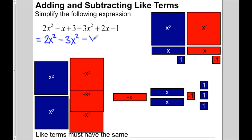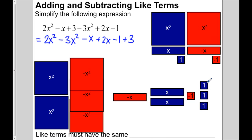You notice that the squares are together, rectangles together, little squares together — those are like terms. This 2x squared and the 3x squared are like terms because they're the same shape in terms of the tiles. The negative x and the plus 2x are like terms as well. And then the minus 1 and the plus 3 are like terms — they're the same type.